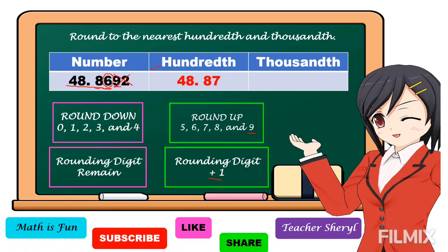If we're not going to drop the digits, we change them into zeros. However, zeros after non-zero digits are insignificant zeros, so we can cancel or delete those two zeros. Our final answer is 48 and 87 hundredths.